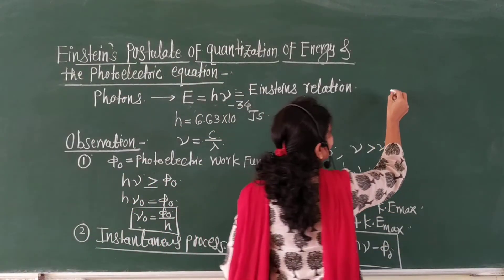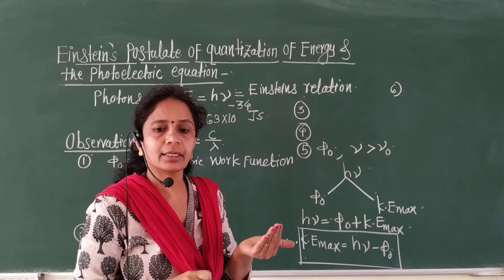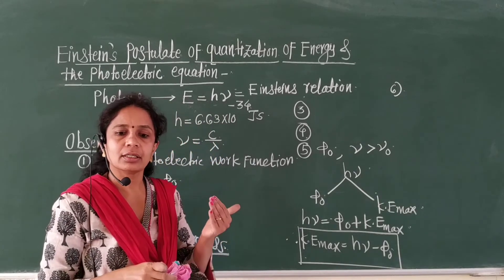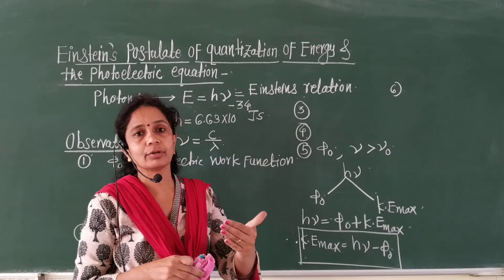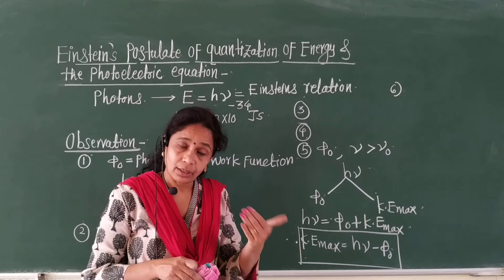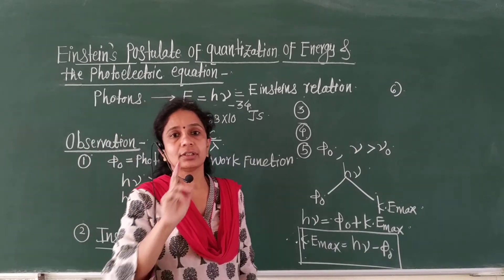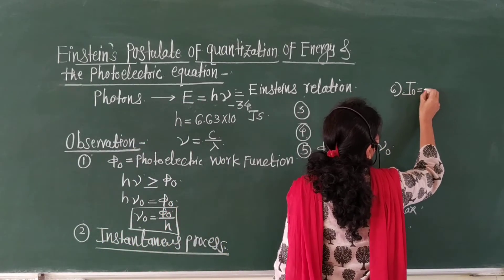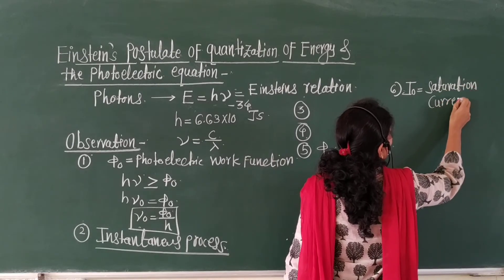The next postulate is related to potential. If the collector plate is at higher potential with respect to the emitter, the electric field will accelerate the electrons towards the collector, and current flows through the circuit. If the collector potential increases further, this photoelectric current remains constant — that constant current is called the saturation current, denoted by I₀.